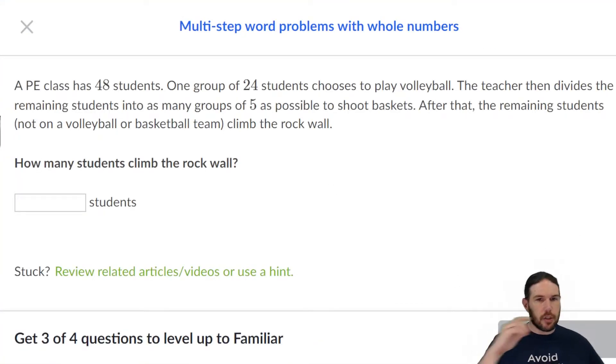A PE class has 48 students. One group of 24 chooses to play volleyball. So we're now at 24, right? 48 minus 24. The teacher then divides the remaining students into as many groups of five as possible to shoot baskets.